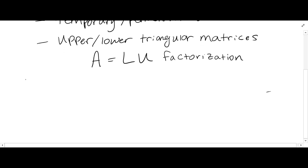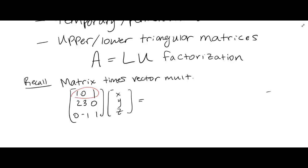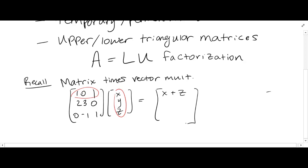If you remember, we talked about matrix times vector multiplication. So if you take some matrix times a vector (x, y, z), you can compute it as dot products — dot products of rows with a column. So you would get x plus z in the first entry, 2x plus 3y in the second entry, and negative y plus z in the third entry.